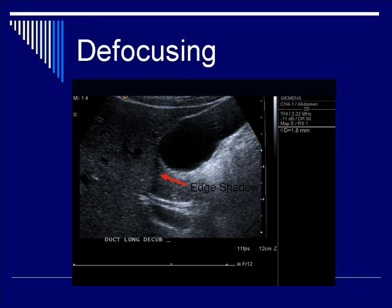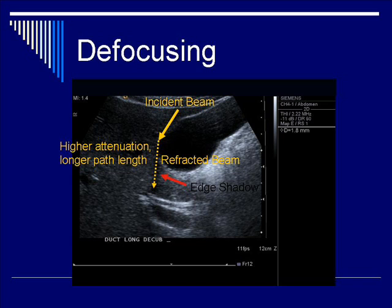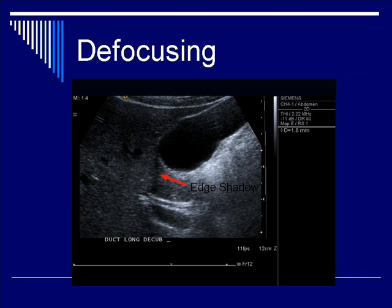On this image, the gallbladder edge has a dark line distal to the curved surface, pointed out by the arrow. Reconstructing the mechanism: the incident beam from the transducer traverses the path outlined by the yellow line, hits the curved surface of the gallbladder, becomes refracted, and you lose a lot of signal from the initial beam. When the signal returns to the transducer, due to higher attenuation from the extra-long path length, much less signal comes back than from surrounding regions, giving you the dark anechoic shadow known as defocusing. This is a beautiful picture of the gallbladder, with the bile duct visible distal to it.